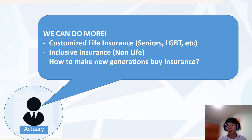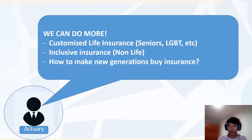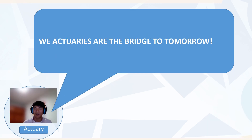But we actuaries can do more about social inclusion. We can create customized products for seniors and LGBT movements, or inclusive insurance in non-life products. And what about social inclusion for the new generations? How to make them buy insurance? We actuaries can use our skills and abilities to create new solutions, or to add value to pre-existing products and services, so that we can provide protection and social inclusion, and therefore build a better society. That's why we actuaries are the breed of tomorrow.